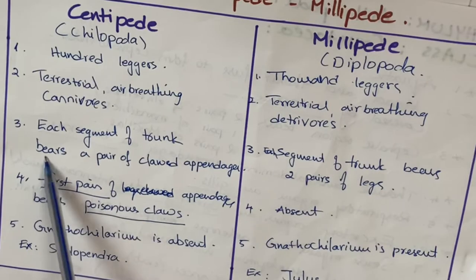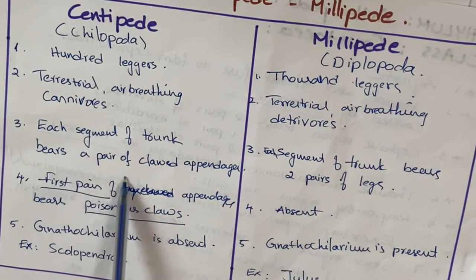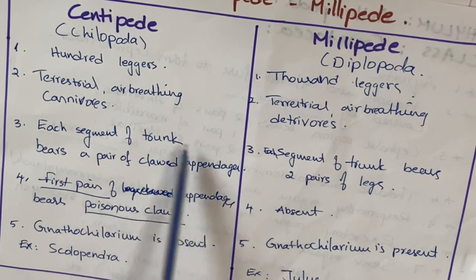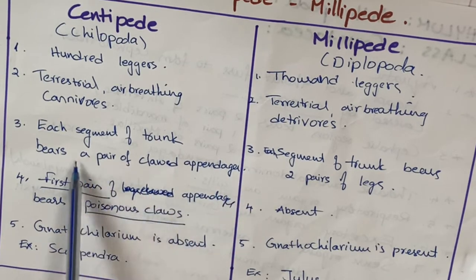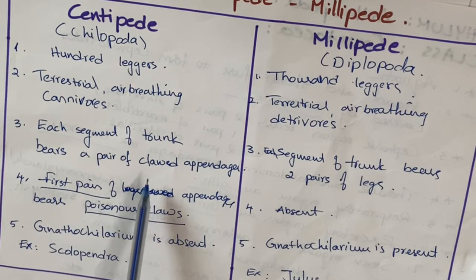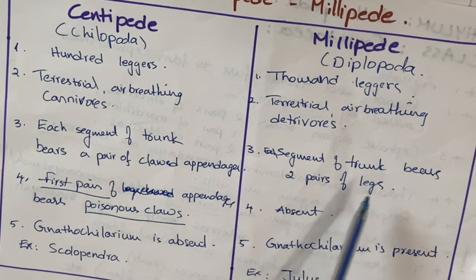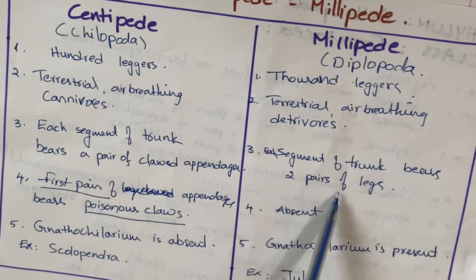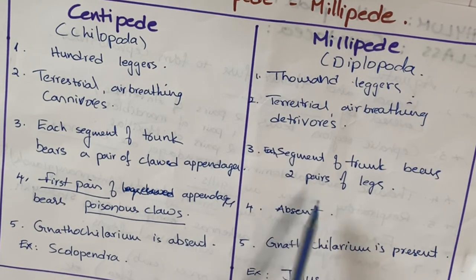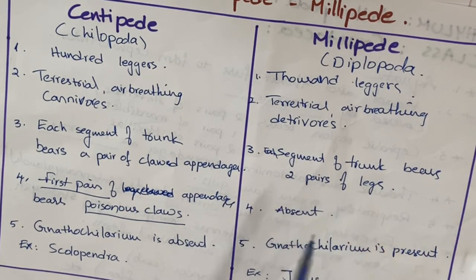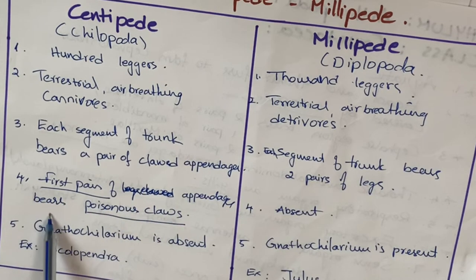Regarding trunk appendages: in centipedes, each segment of the trunk bears one pair of jointed appendages. In millipedes, each segment bears two pairs of legs, which is why the number of legs is doubled in millipedes.